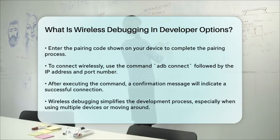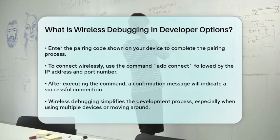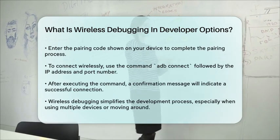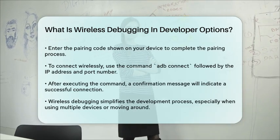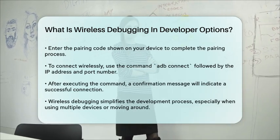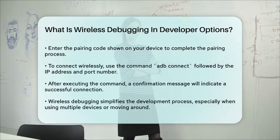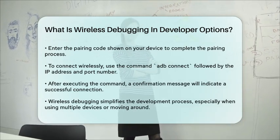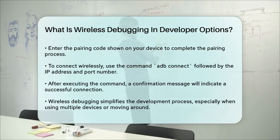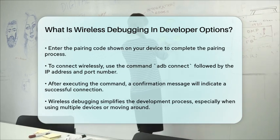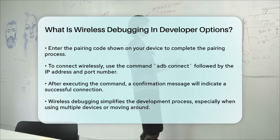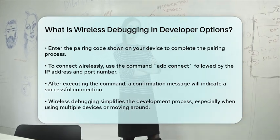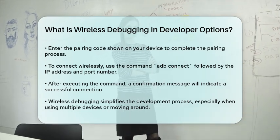Finally, to connect your device wirelessly, use the command ADB connect followed by the IP address and port number. Press Enter, and you should see a confirmation that you're now connected.